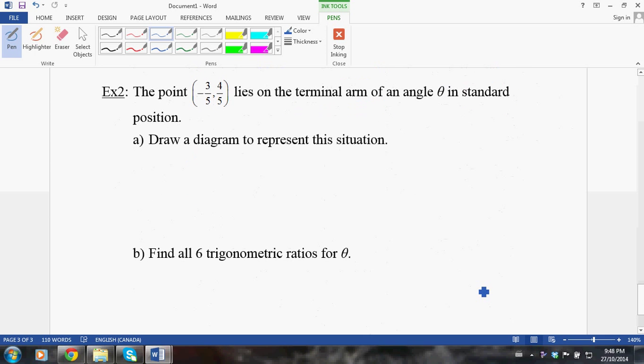Example number 2 is, here's a point that lies on the terminal arm of an angle theta in standard position. Again, we're going to draw a diagram to represent this situation. Which quadrant is it in? So, the x value is negative, the y value is positive. So, that means it's going to be in quadrant number 2. We'll say negative 3 fifths and 4 fifths. We'll put it kind of up over there. So, there is my point P over there. I think that's enough to figure it out. Maybe I'll just write down the ordered pair over there as well.